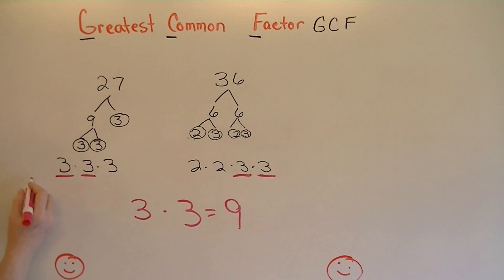If we saw a fraction that was 27 over 36, we could use the greatest common factor to simplify it. 27 divided by 9 is 3, and 36 divided by 9 is 4. So 27 over 36 simplified is 3 fourths.